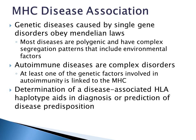Genetic diseases caused by single-gene disorders obey Mendelian laws, giving dominant and recessive disorders. However, most diseases aren't caused by a single gene and have very complex segregation patterns — these complex diseases are usually multifactorial and polygenic, including multiple genes and environmental factors, such as heart disease and diabetes. Autoimmune diseases are complex disorders. At least one of the genetic factors involved in autoimmunity is linked to the MHC, and determination of a disease-associated HLA haplotype can aid in the diagnosis or prediction of autoimmune disease predisposition.